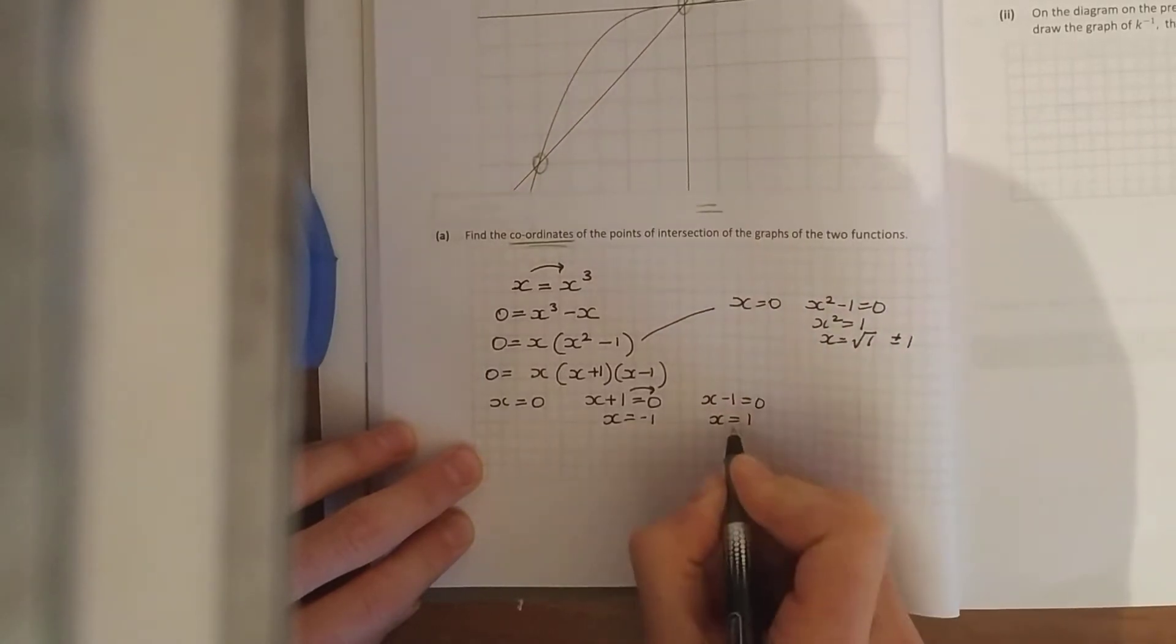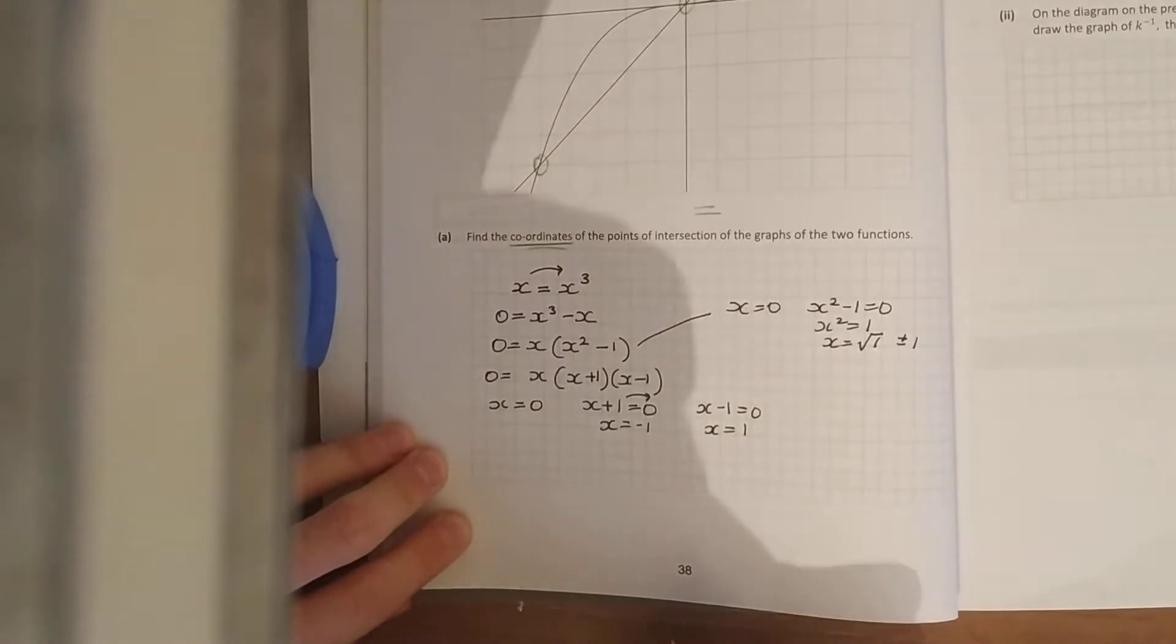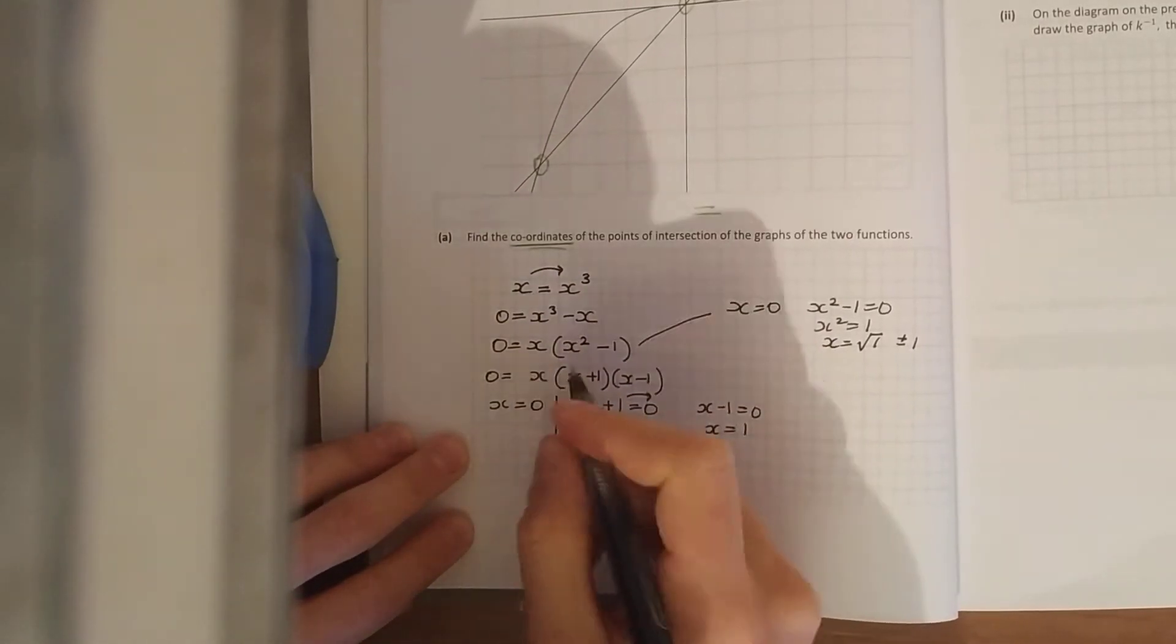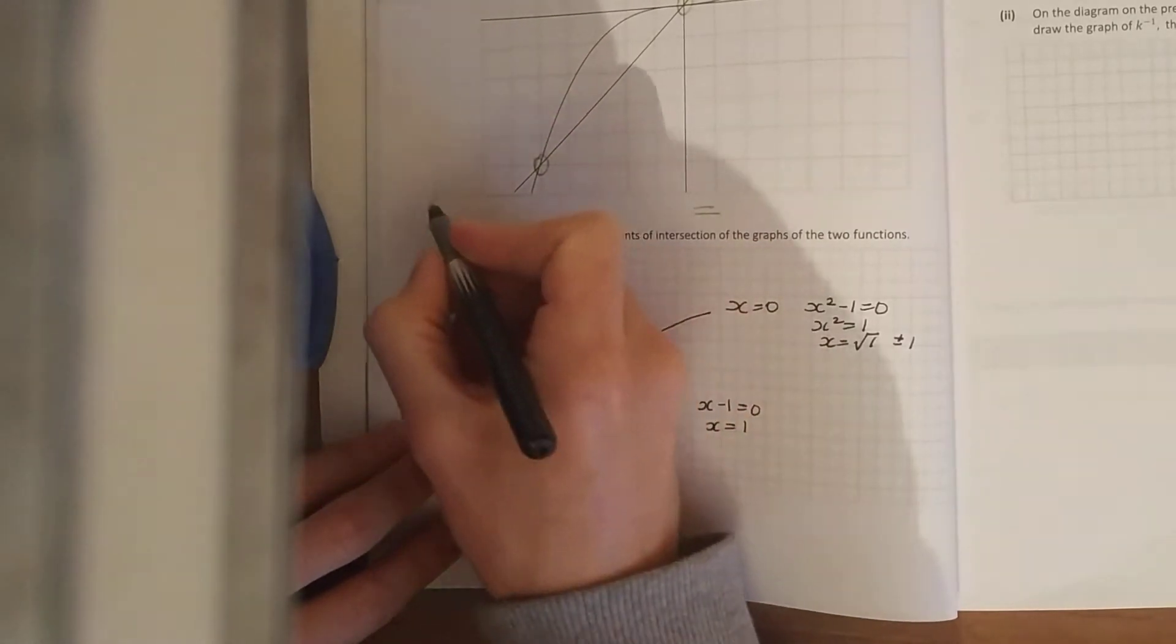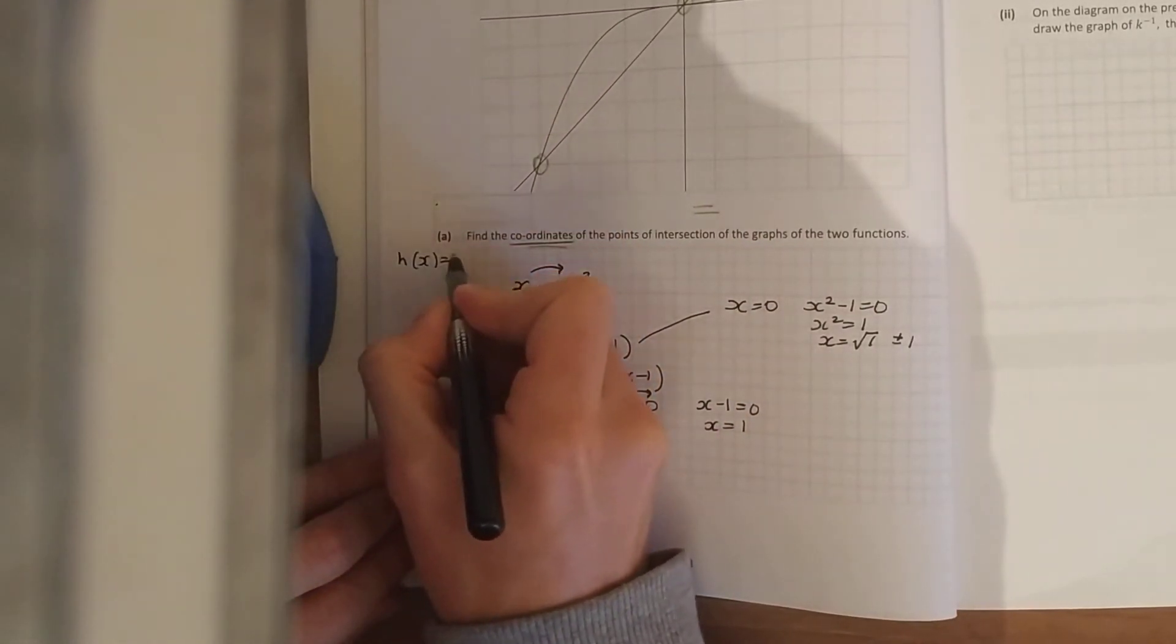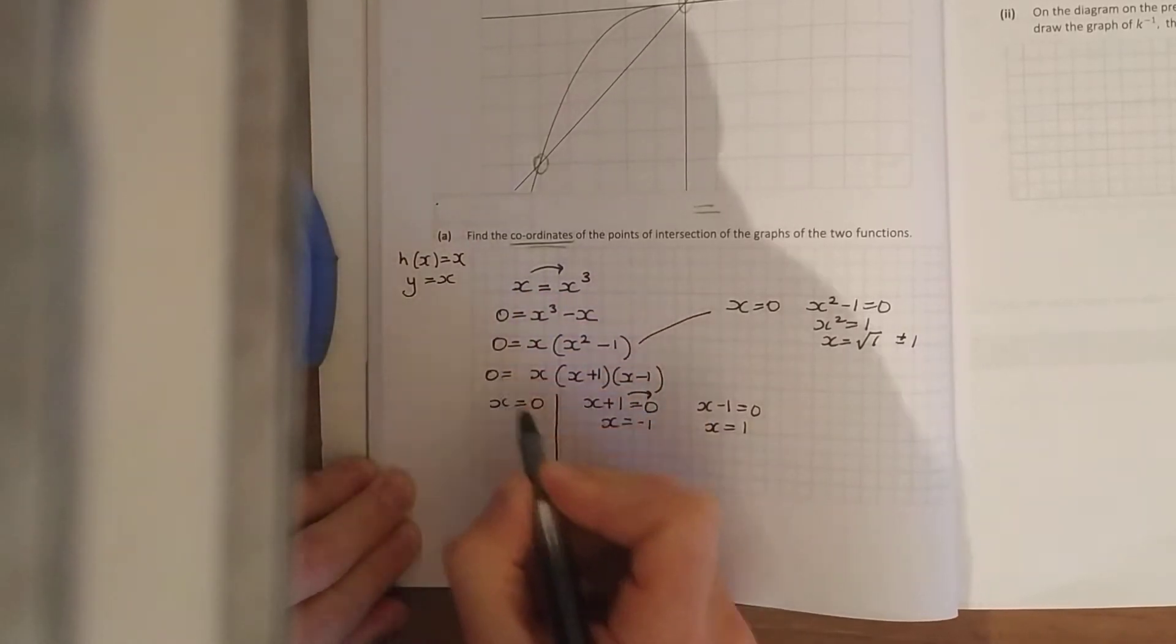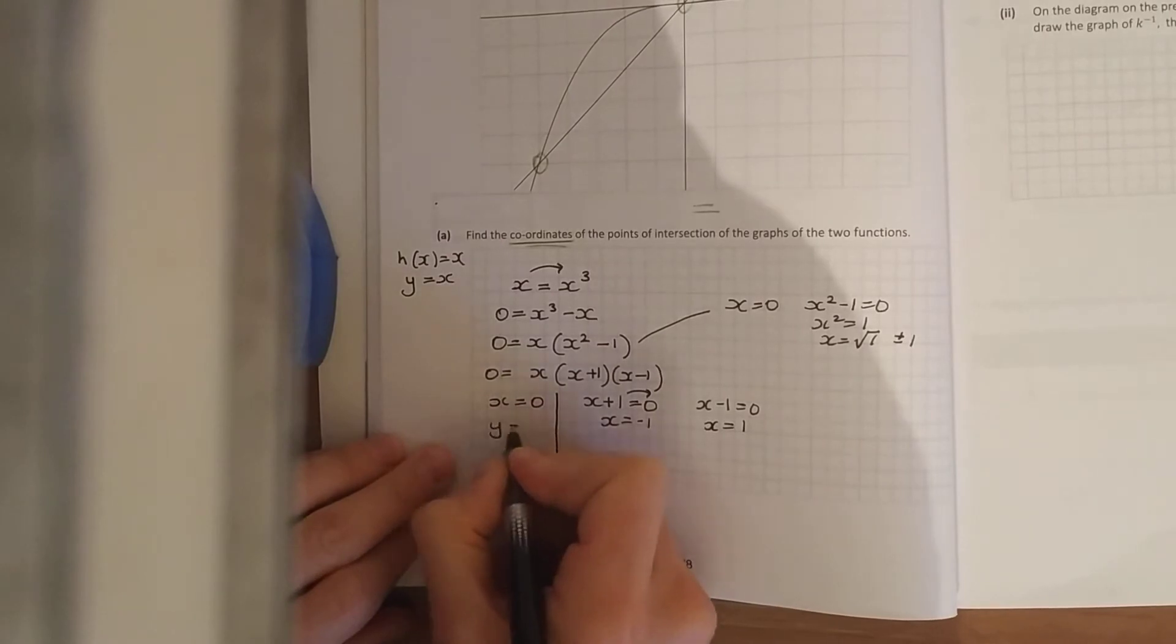Now they did say the coordinates, you need an x and a y. So you just simply sub them in. Remember one of your functions there is h(x) = x. Other way saying h(x) is your y value. So when x is 0, y is also 0.